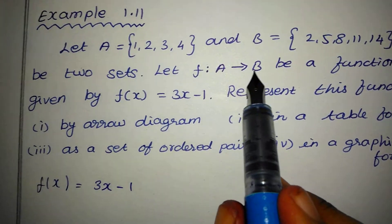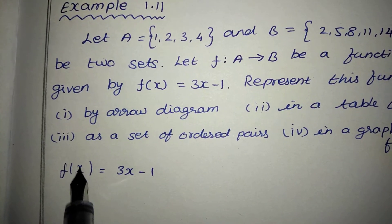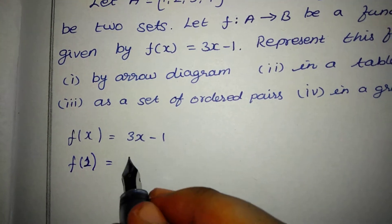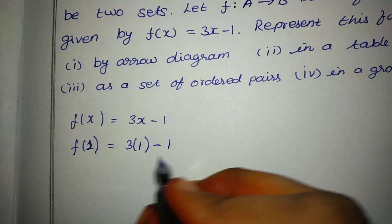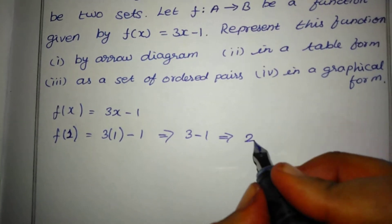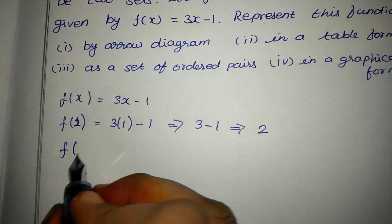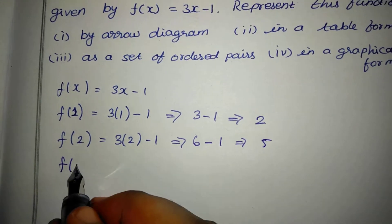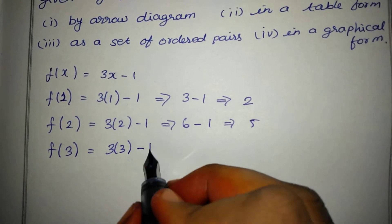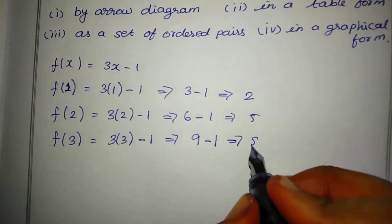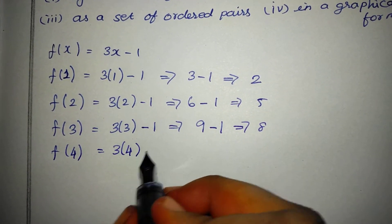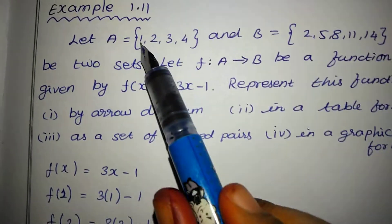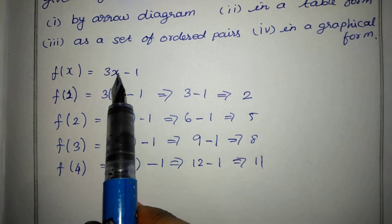We are going to substitute our values. f(1) = 3×1 − 1 = 2. f(2) = 3×2 − 1 = 5. f(3) = 3×3 − 1 = 9 − 1 = 8. f(4) = 3×4 − 1 = 12 − 1 = 11. So for the set {1, 2, 3, 4}, f(x) = 3x − 1 gives us these values.